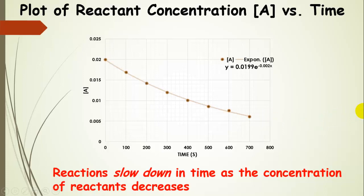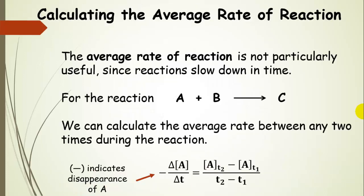Now reactions slow down in time as the concentration of reactants decreases. We can calculate an average rate of reaction. It's not particularly useful since reactions do slow down in time. However, we can calculate the average rate between any two times during the reaction. So the change in concentration of A over the change in time, Δ[A]/Δt equals [A] at t₂ minus [A] at t₁. These are just subscripts, and then those are the times associated with these concentrations.